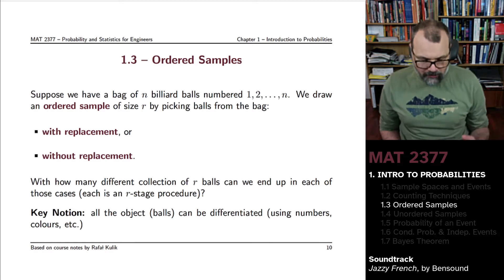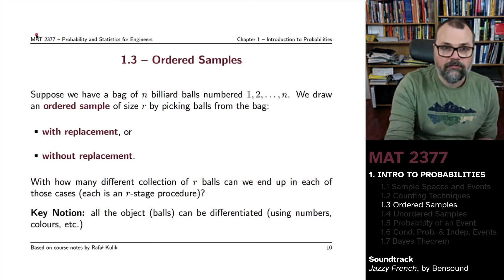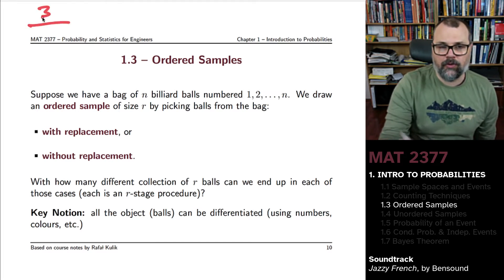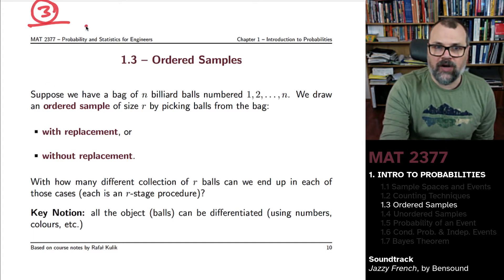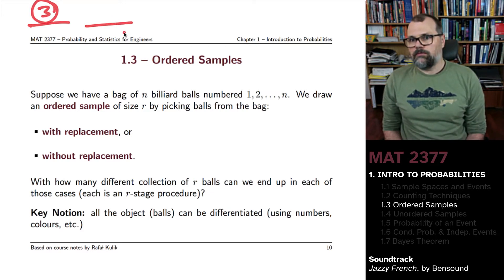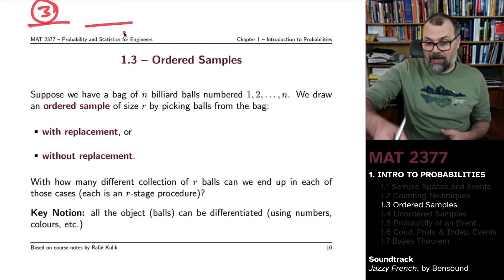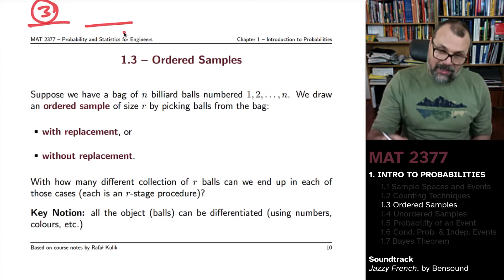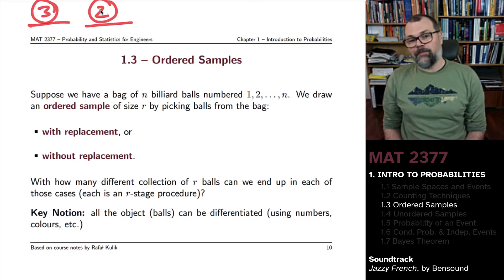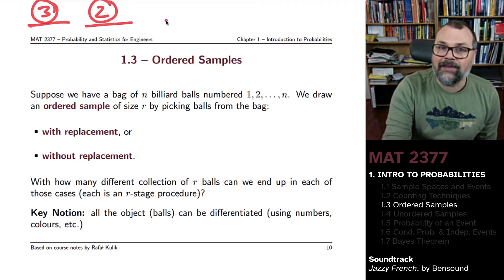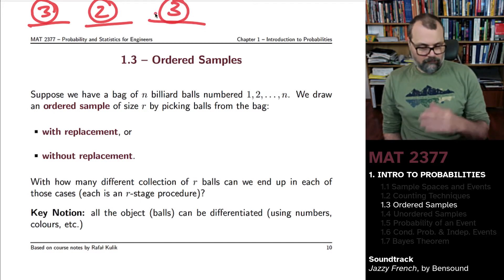We can pick them with replacement. With replacement basically says you look at the first thing you draw, perhaps the third ball, then you put it back in the bag and you draw a new ball. The ball that you draw could be the same as the one you originally drew. Let's say in this case it was a two ball. I put that back in the bag and I draw again, and let's say I draw the three ball again. And perhaps I stop right here.